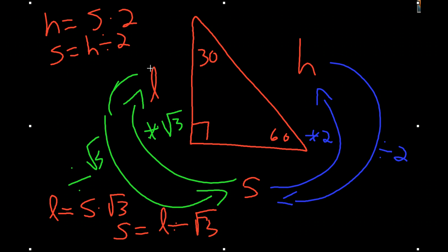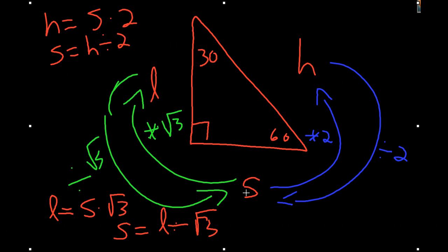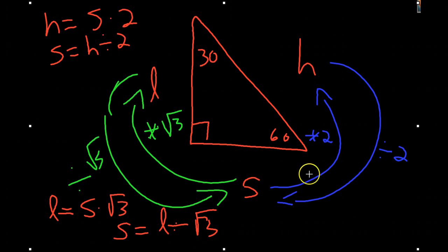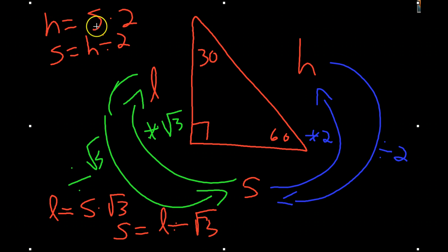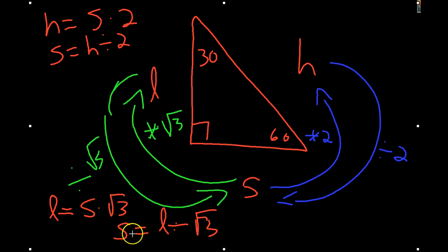If you know the long leg and you want to get the short leg, you take the length of the long leg and divide it by the square root of 3, knowing that you might need to rationalize your denominator, which we'll talk about later. And then if you know the long leg and you want to get to the hypotenuse, you first get to the short leg by dividing by the square root of 3, then you take that length and multiply it by 2 to get to the hypotenuse, knowing that your four equations are right here: the hypotenuse equals the short leg times 2, the short leg equals the hypotenuse divided by 2, the long leg equals the short leg times the square root of 3, and the short leg equals the long leg divided by the square root of 3.